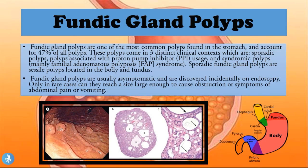Fundic gland polyps are one of the most common polyps found in the stomach, accounting for about 47 percent of all polyps. They come in three distinct clinical contexts: sporadic polyps, polyps associated with proton pump inhibitor usage in people who take PPIs for conditions like GERD or gastritis, and syndromic polyps mainly associated with familial adenomatous polyposis (FAP) syndrome.